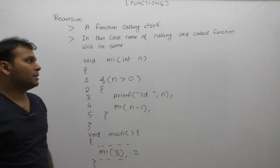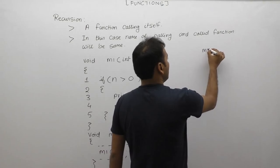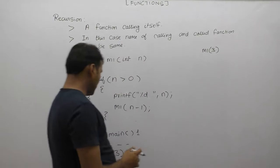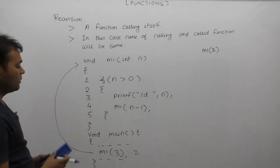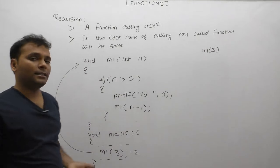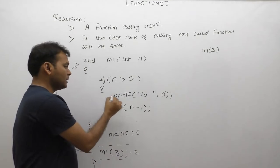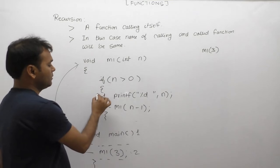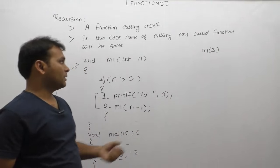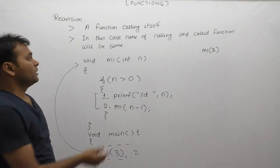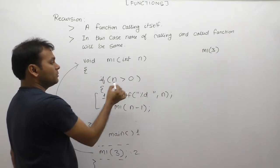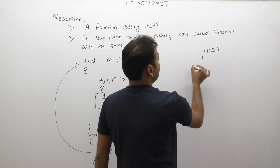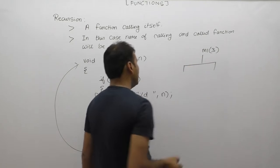First, m1 is called with value 3 - so we have m1(3). The function has 5 statements total, but the actual code to consume is two statements: print tab and the m1 recursive call. These two statements will be represented using a binary tree. So when m1 is called for 3, n is 3, and 3 is greater than 0, so both statements need to be processed.